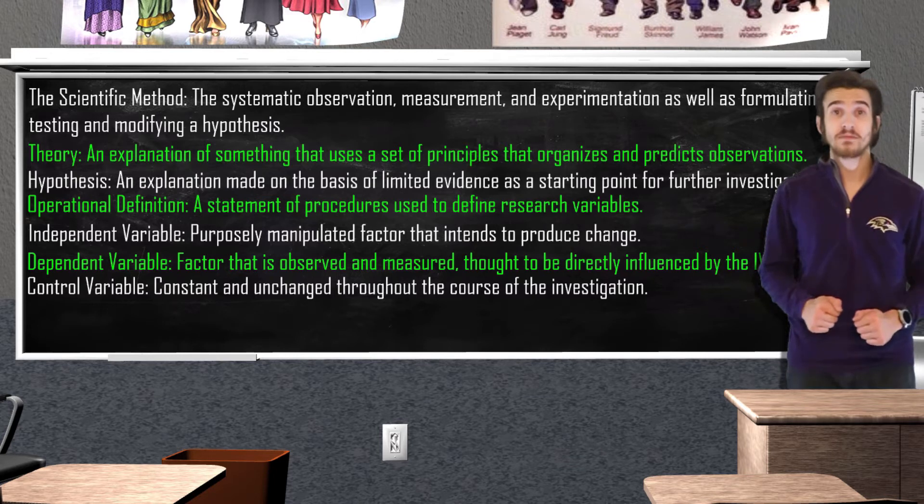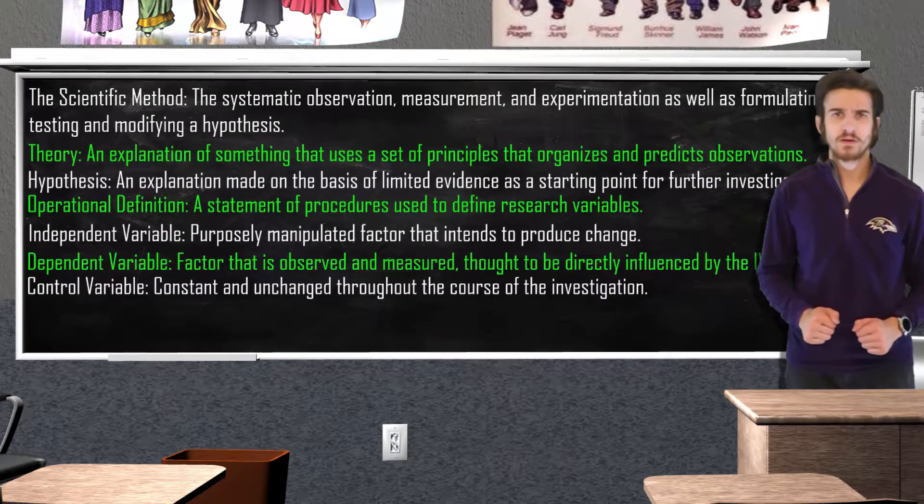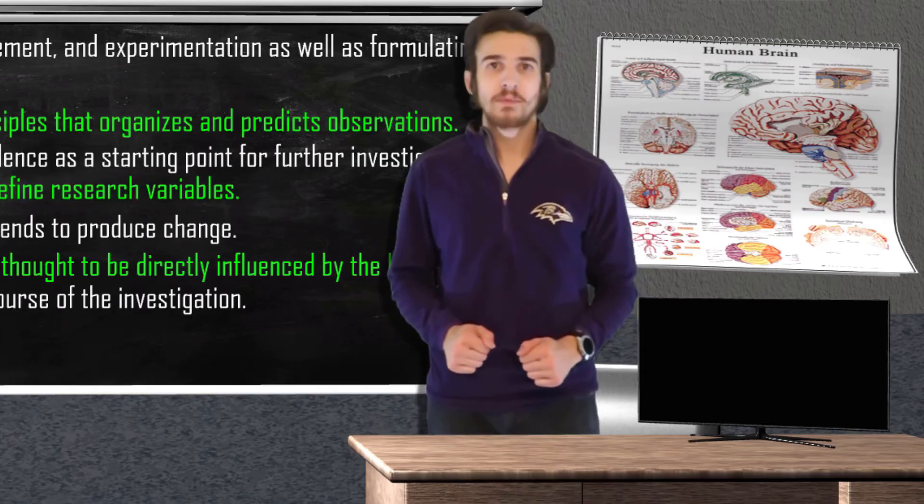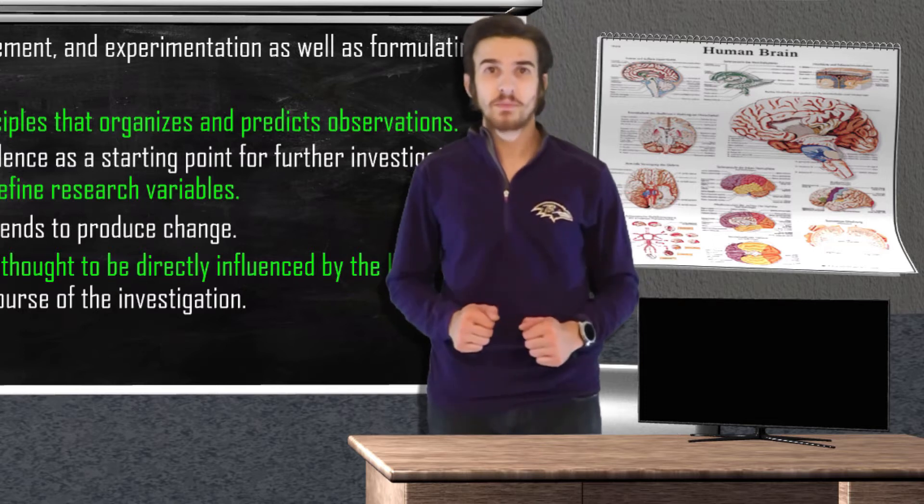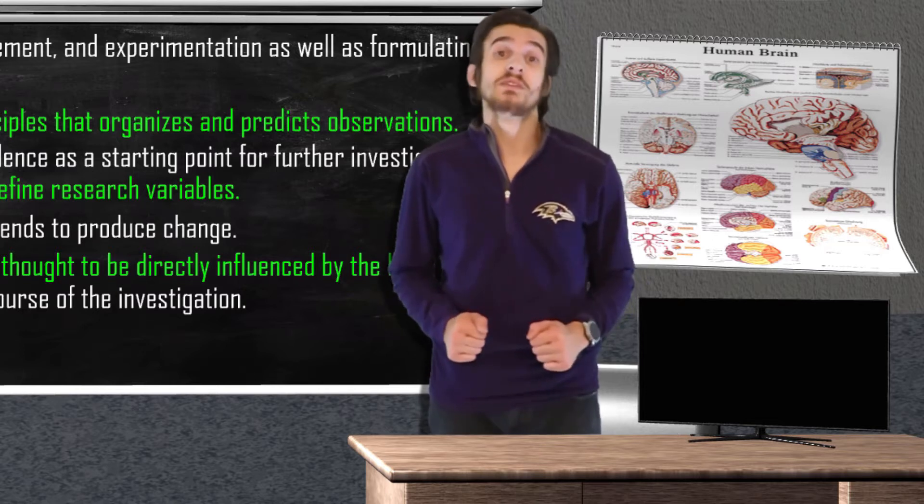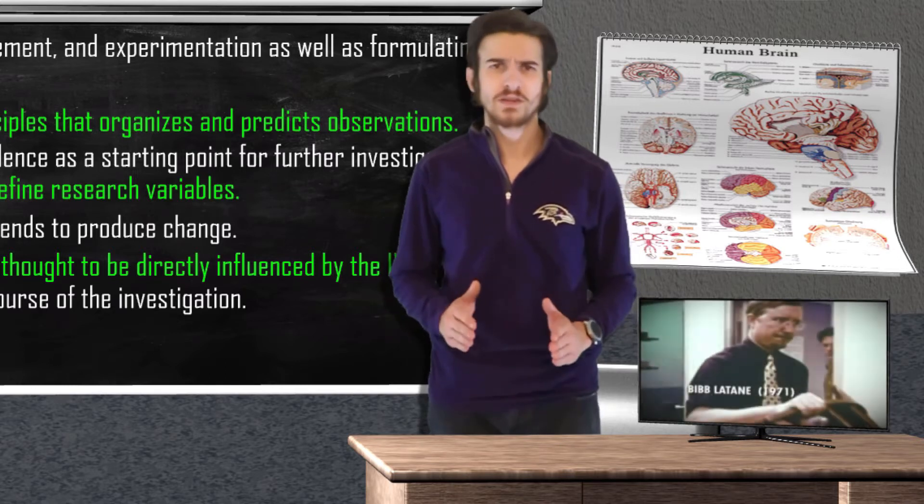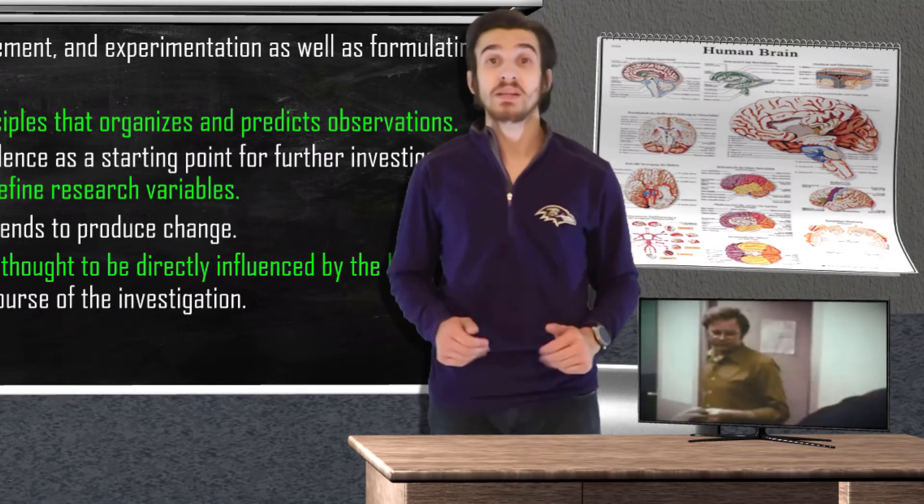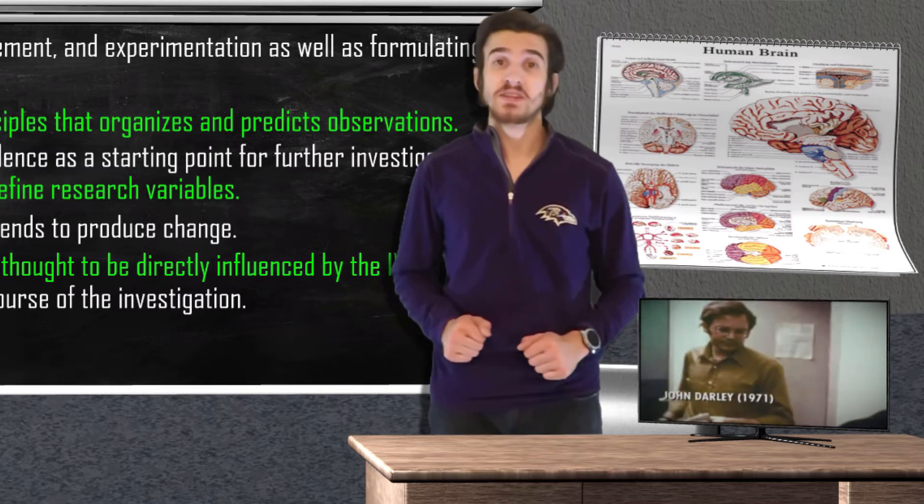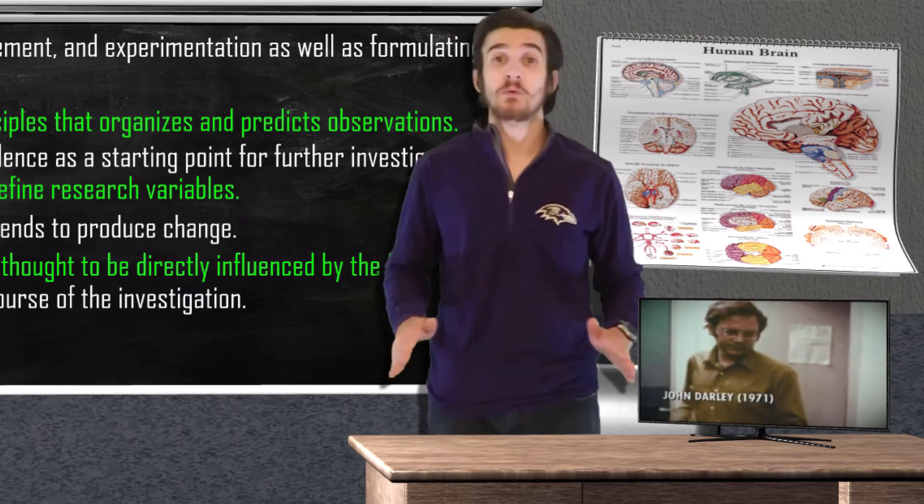We hypothesize that our independent variable will have a direct cause and effect relationship with our dependent variable. Let's say with our bystander effect hypothesis, we develop an experiment. And when I say we develop an experiment, what I really mean is we're going to be stealing a famous experiment conducted in 1969 by social psychologists John M. Darley and Bibb Latané. I also want to take a second to mention how dope of a name Bibb is when I have a son.